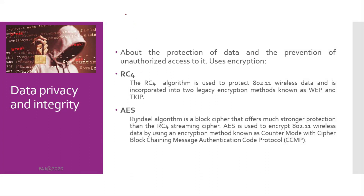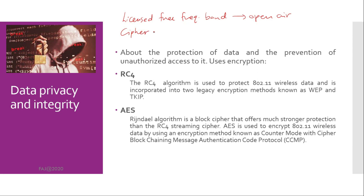Data privacy and integrity. 802.11 wireless networks operate in license-free frequency bands, and all data transmissions travel in the open air. Protecting data privacy in a wired network is much easier because physical access to the wired medium is more restricted, whereas access to wireless transmissions is available to anyone in listening range. Therefore, using cipher encryption technologies to obscure information is mandatory to provide proper data privacy. A cipher is an algorithm used to perform encryption. The two most common algorithms used to protect data are the RC4 algorithm and the Advanced Encryption Standard (AES) algorithm.